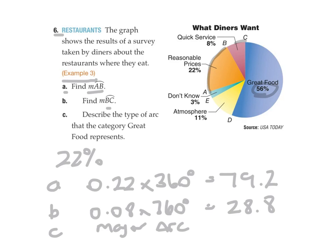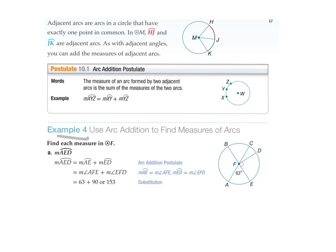So here's example four. And this is finding arc addition. Or finding the measure of arc. So AED. AED is this section from here to here. While AE is 63 as they've got here. And ED is a right angle. So that's 90. So it's 153 degrees in total. So it's basically some adding or occasionally some subtracting.